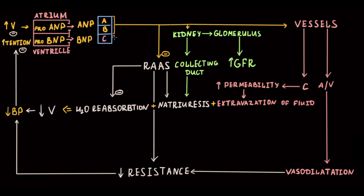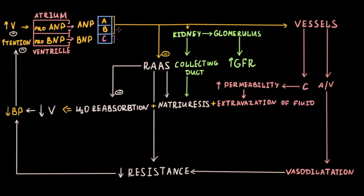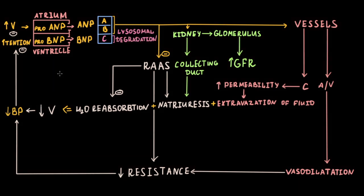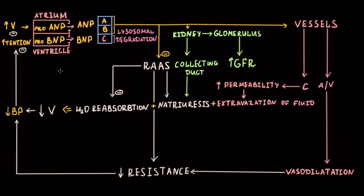ANP and BNP can be inactivated by binding to natriuretic peptide receptor type C, which induces lysosomal natriuretic peptide degradation. They can also be degraded by neprilysin, a specific zinc-containing membrane-bound enzyme.